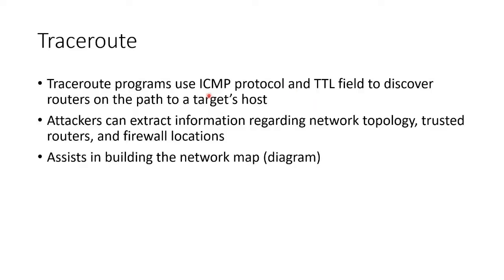ISPs get blocks of IP addresses, so we can easily look up a particular address — like 65.x.x.x belongs to one ISP, 24.x.x.x belongs to another. We can look at the logical path a packet takes to get to a target, and this helps us figure out network topology, routes, routers, and firewall locations, which all helps us build the network map.